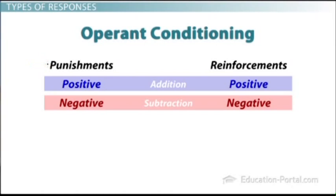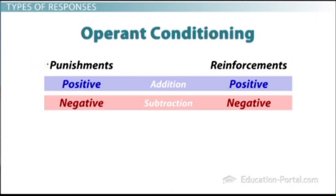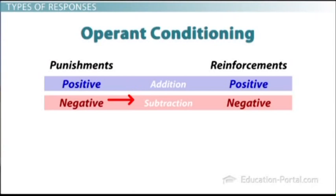When you choose to do a behavior, you can get one of four types of responses. You can get a punishment or a reinforcement — reinforcement makes you want to do that behavior again. It gets a little complicated because there are two types of punishments and two types of reinforcements. In both cases, there's positive and negative, which might sound weird — positive punishment doesn't sound right. But that's not what it means.